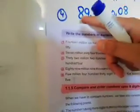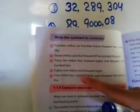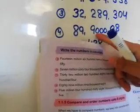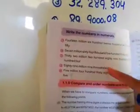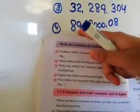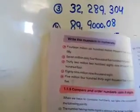Chautha number hai: eighty nine million nine thousand and eight. Yeh dekhe — eighty nine million, nine thousand, and eight. Thik hai.